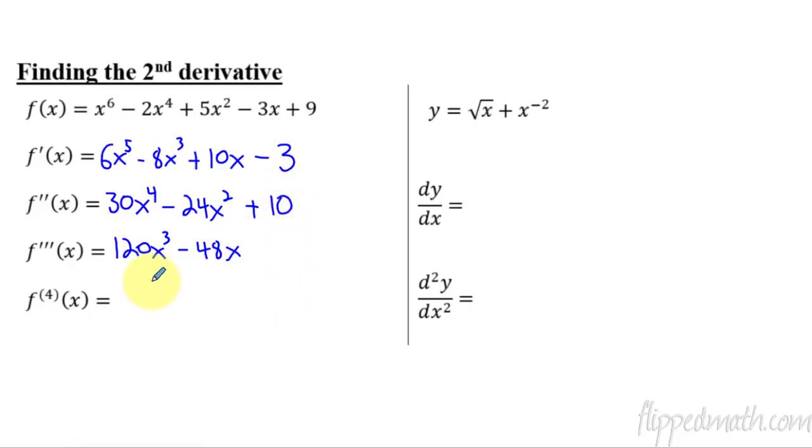And then the fourth derivative, 120 times 360, 360x squared minus 48. And we could keep going. The fifth derivative, this would be gone. And eventually, and this is kind of interesting, if you have a polynomial function, if you take enough derivatives, eventually you're going to end up with zero when you finally get done, because it's going to come down to a constant. The derivative of a constant is zero. But that only works if it's a polynomial function.